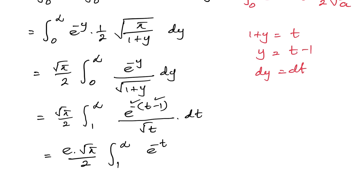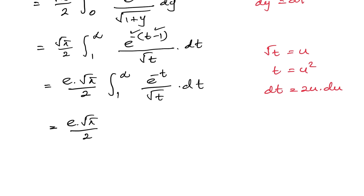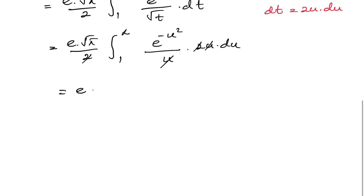Now I take a second substitution: let square root of t equal u, so t equals u squared and dt equals 2u du. The limits remain 1 to infinity. Substituting: e to the minus t becomes e to the minus u squared, square root of t becomes u, and dt becomes 2u du. The u's and the 2 cancel appropriately, leaving e times square root of pi times the integral from 1 to infinity of e to the minus u squared du.